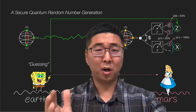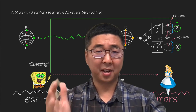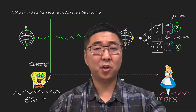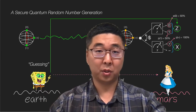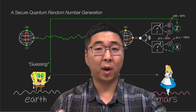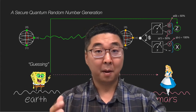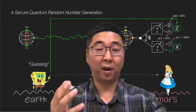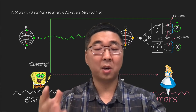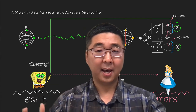Hi, what is a secure QRNG? The QRNG can produce a secure random number by using the uncertainty relation in quantum theory.